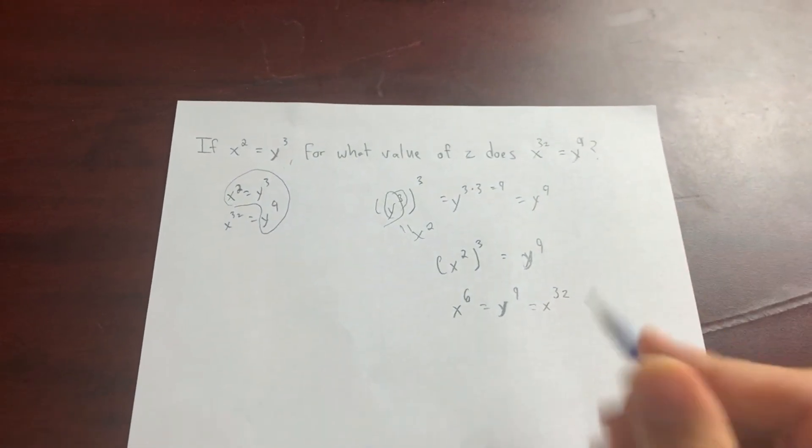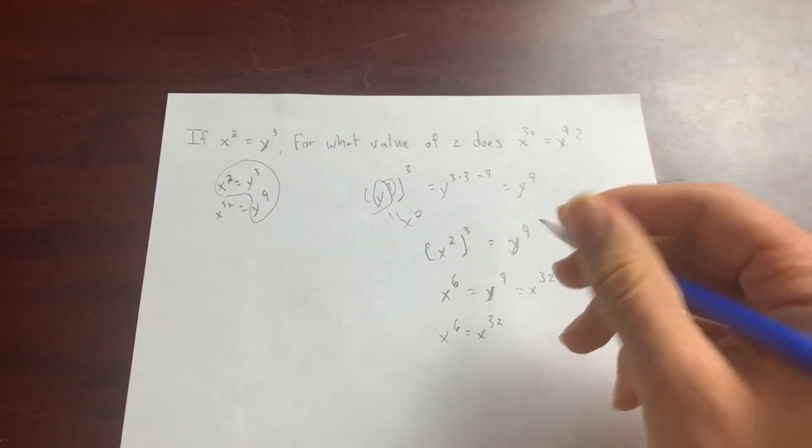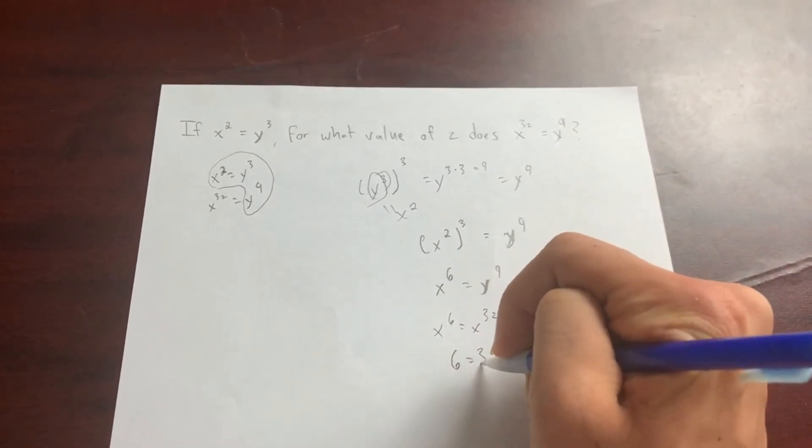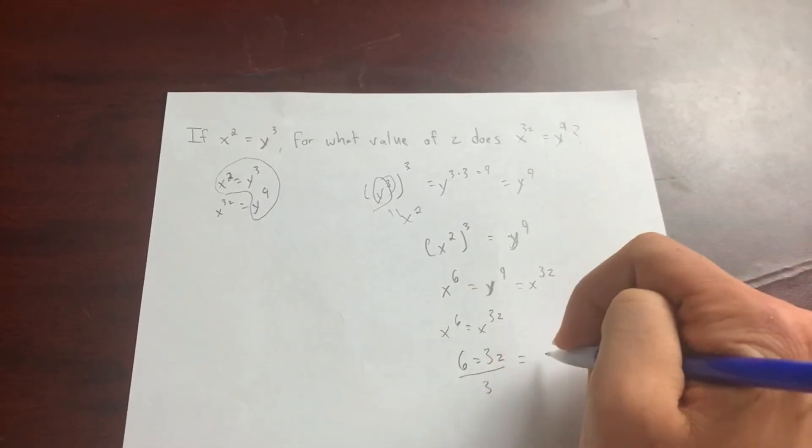Let's just compare the x's, same basis. x to the 6 equals x to the 3z. Same basis, so the exponents equal each other. 6 equals 3z. And from here, divide by 3. So z equals 2.